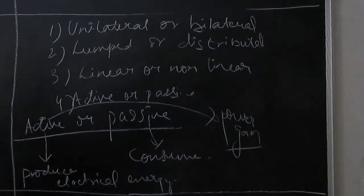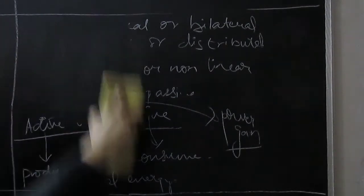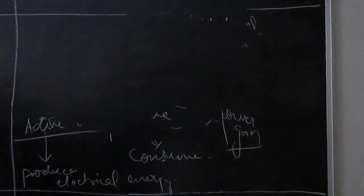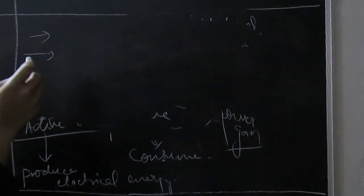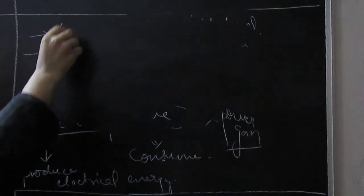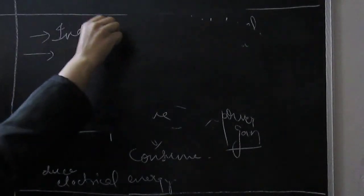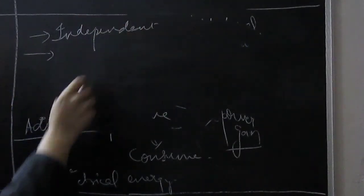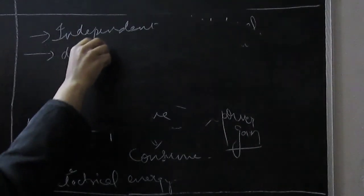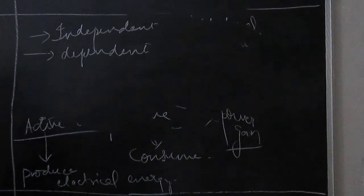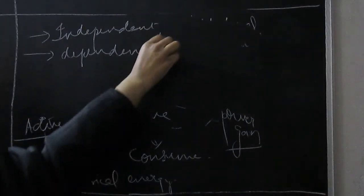This was an introduction to the circuit elements. What are the types of electrical energy sources? There are two types of electrical energy sources. One is independent sources, and the other is dependent sources, like current dependent voltage source, or when we call it dependent, we call it control.